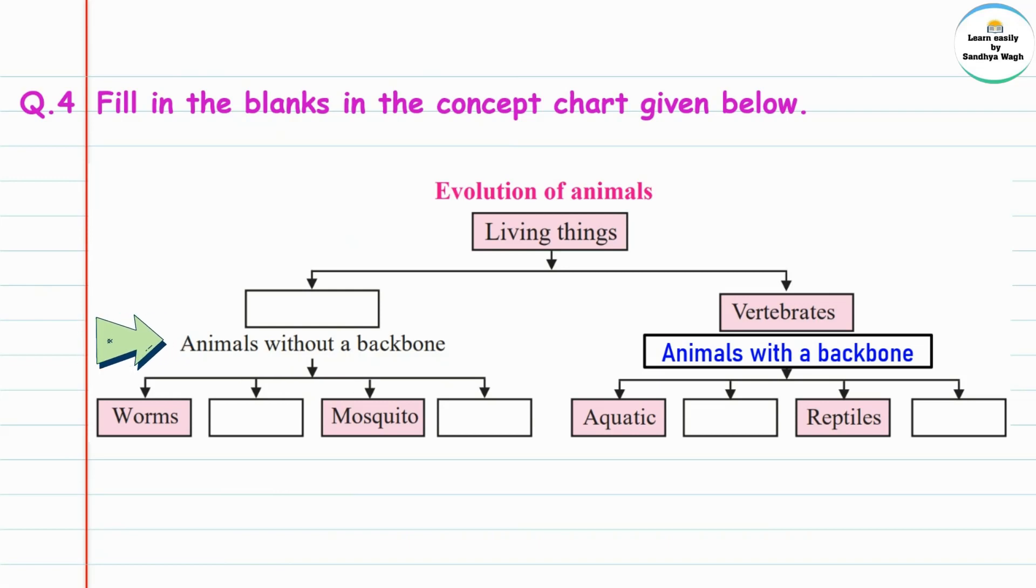Under invertebrates we have animals without a backbone like worms, snails, mosquitoes, and earthworms. Now let's look at vertebrates, which are animals with a backbone.